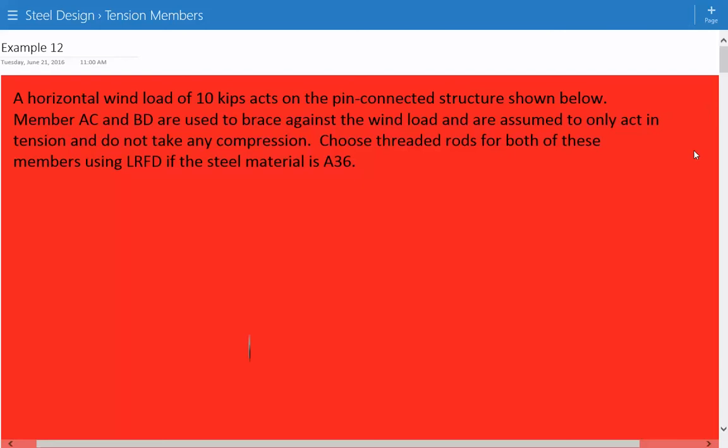Hey everybody, this is example number 12 for steel design for tension members. The problem statement that we have is a horizontal wind load of 10 kips acts on the pin-connected structure shown below.